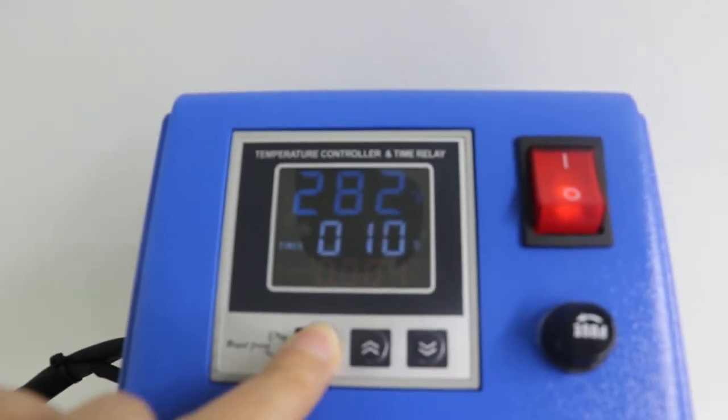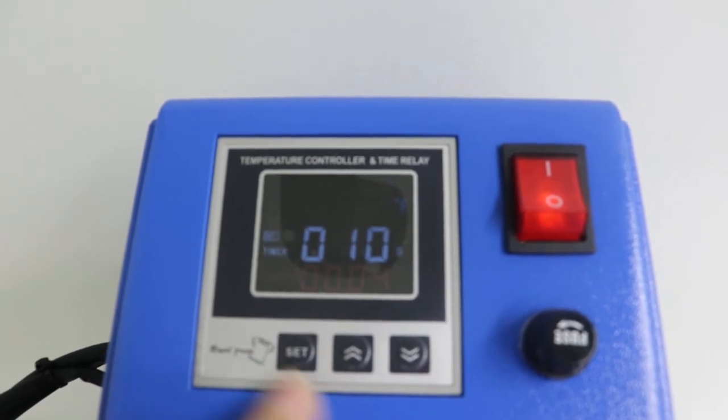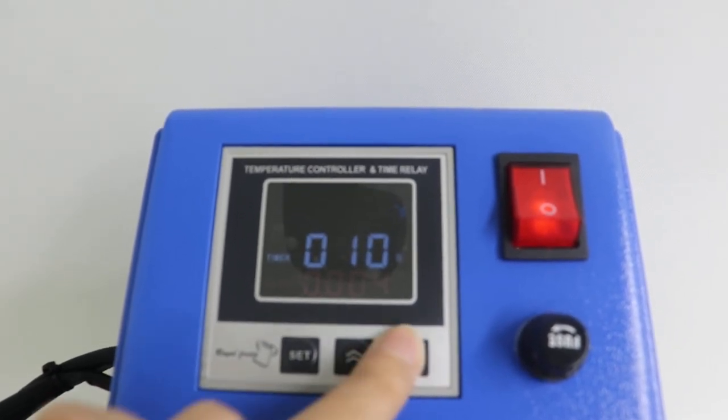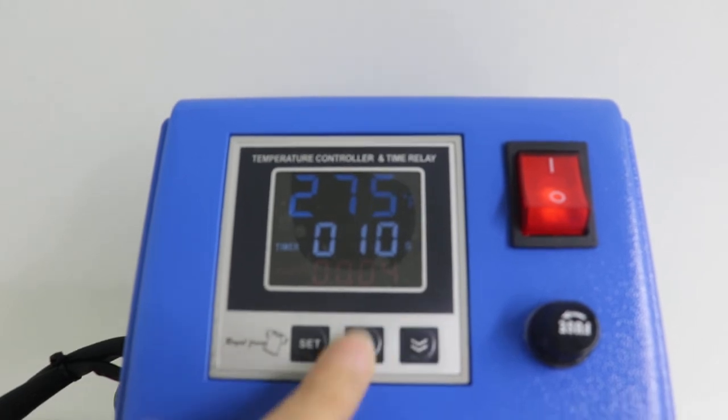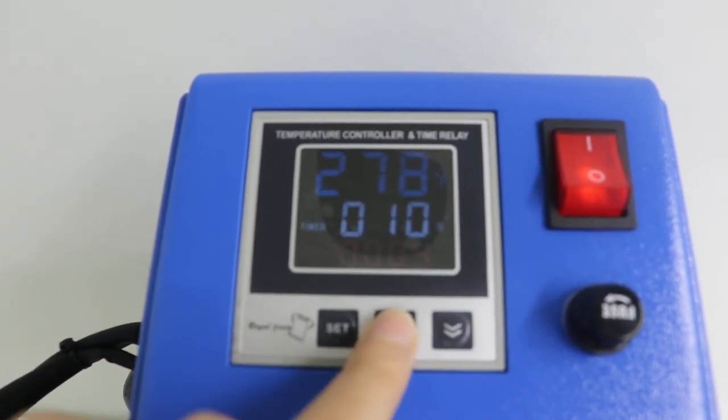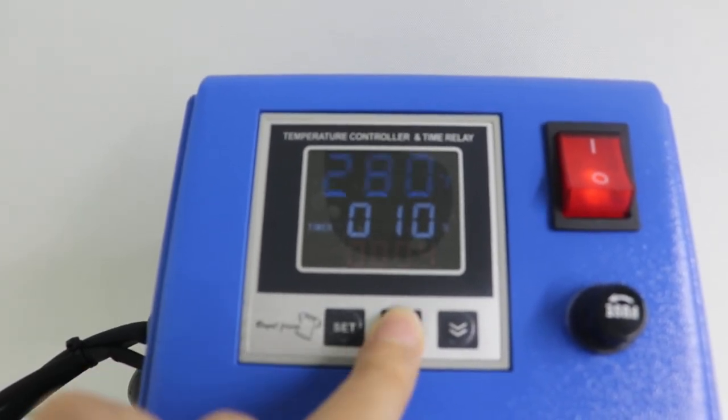First we press the button once. Now it's temperature setting mode. You could press the button to increase. This button to increase the number. We use 208 degree for the sticker transfer on T-shirt.